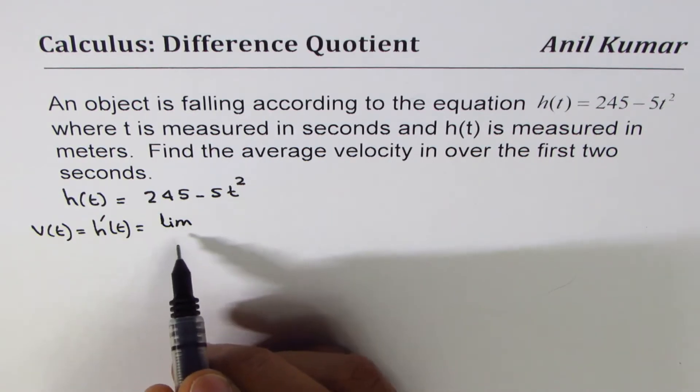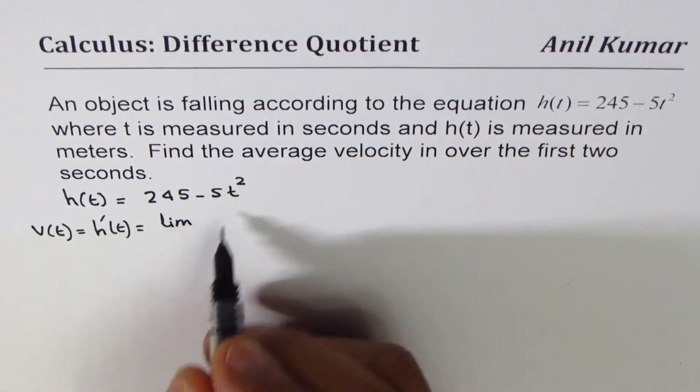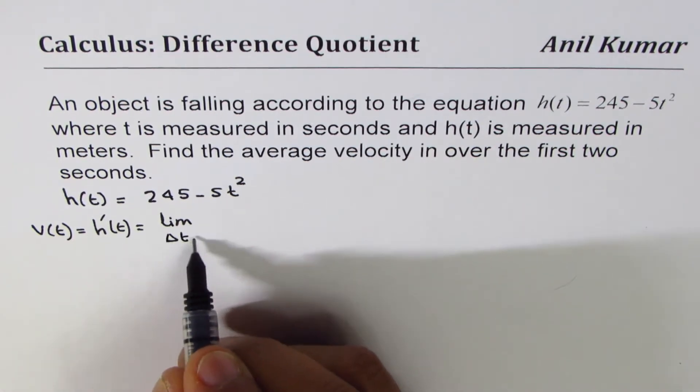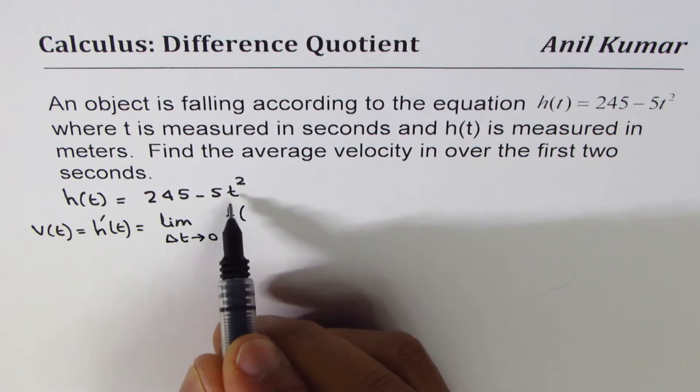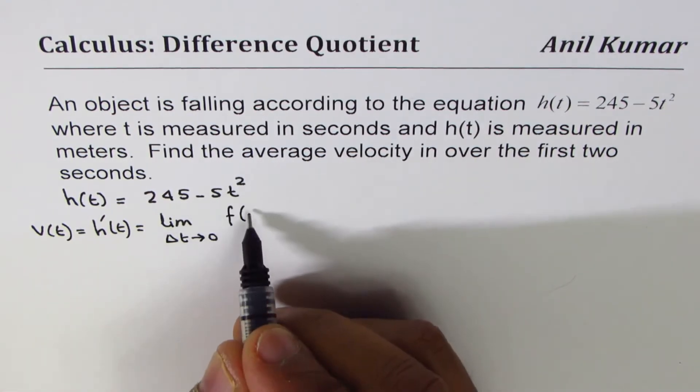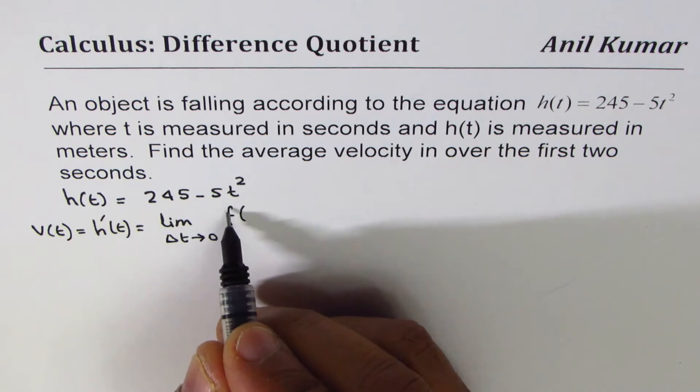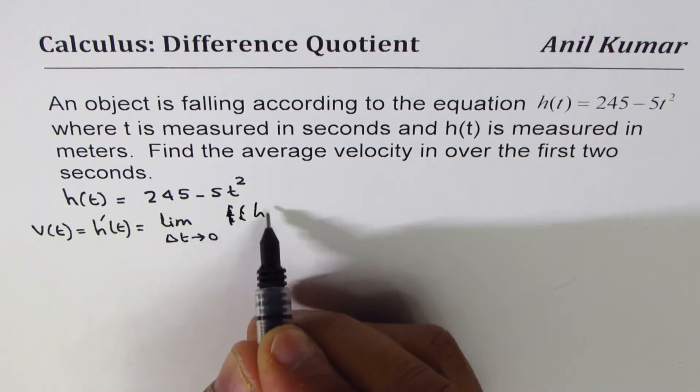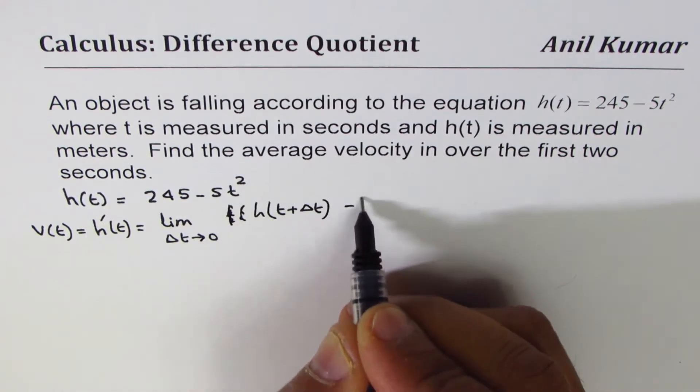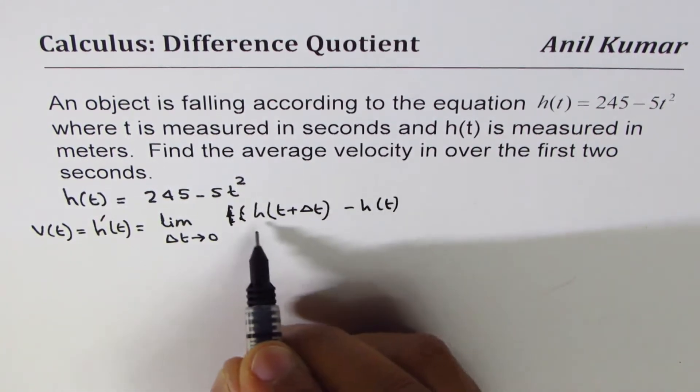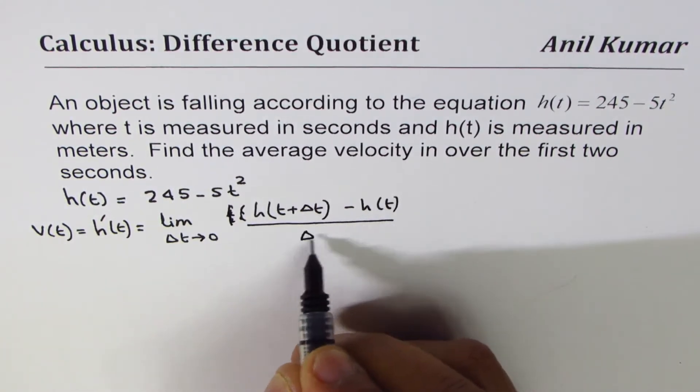We'll take a small variation of delta t, where delta t approaches 0. I should have written h. Anyway, let's write h(t + Δt) - h(t) divided by Δt.